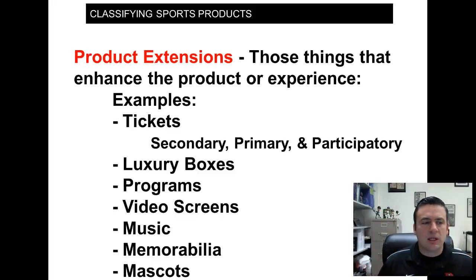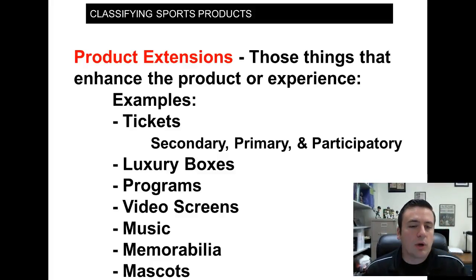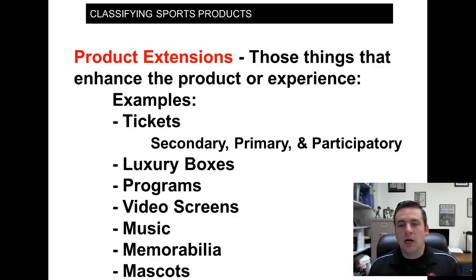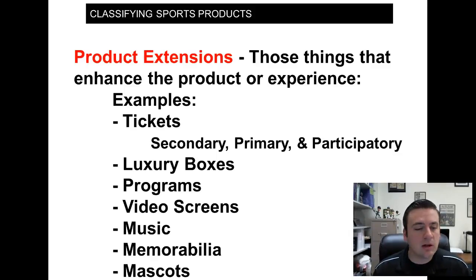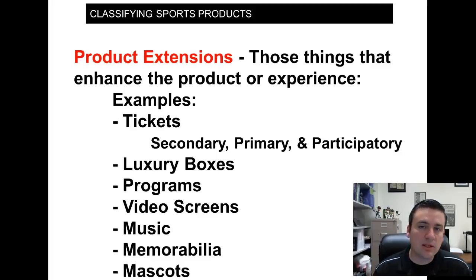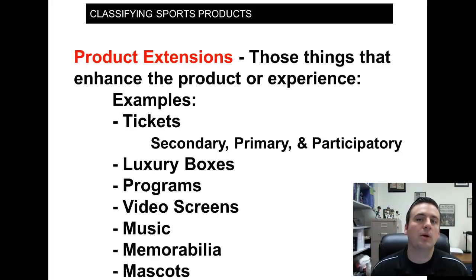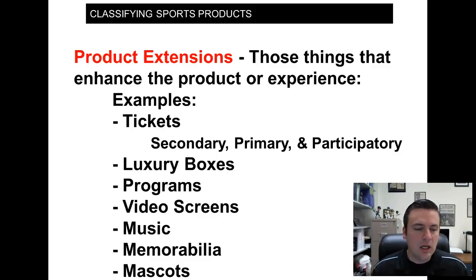Another term is product extensions — things you purchase that you use along with the core product. Say the core product is going to a game. Things that enhance that experience: the way you buy your ticket is a product extension. The secondary ticket market — the resale market — includes examples like StubHub, TicketCity, or SeatGeek. If a team works with one of those, like MLB works with StubHub, that is an example of a product extension for ticketing.